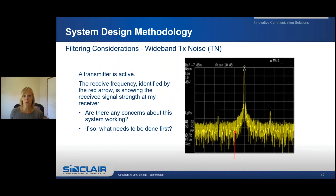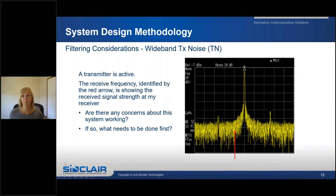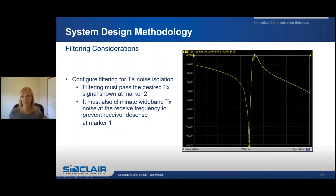Wideband transmitter noise. On the screen you can see an active transmitter and the RX frequency identified by a red arrow showing the received signal strength at that receiver. What you're looking at is an unfiltered transmitter — you can see TX wideband noise on both sides of the receiver frequency, which will result in interference. You can reduce the transmitter noise by adding filtering on the transmitter. The filtering must pass the desired TX frequency as indicated by marker 2, and eliminate TX noise at the receive frequency as indicated by marker 1.